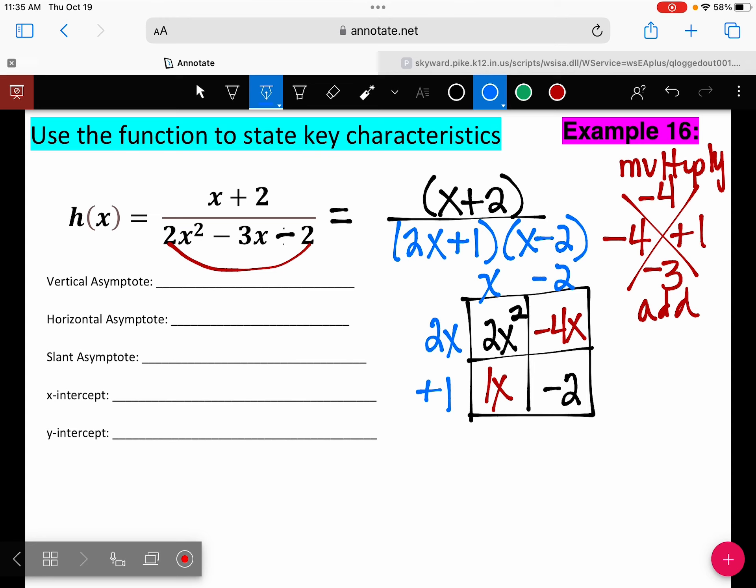Okay, so how many vertical asymptotes do we have? How many factors do we have in our denominator? Two. So we're going to set both of those equal to zero. And my first one would be negative one-half, and the second one is positive two. So let's go ahead and write that in. I have two vertical asymptotes. So we don't have to graph this one. We just need to state the key characteristics.